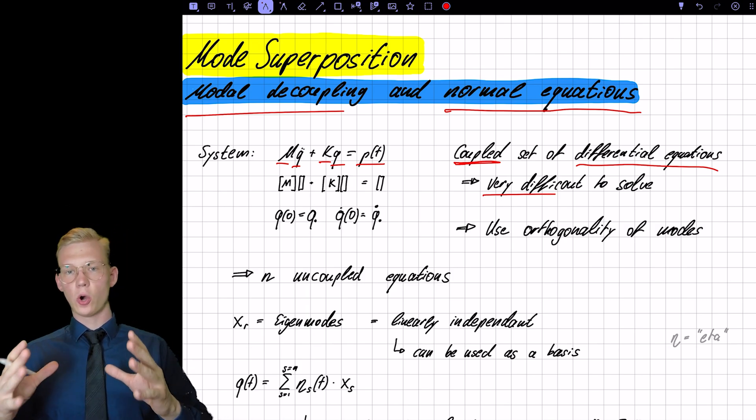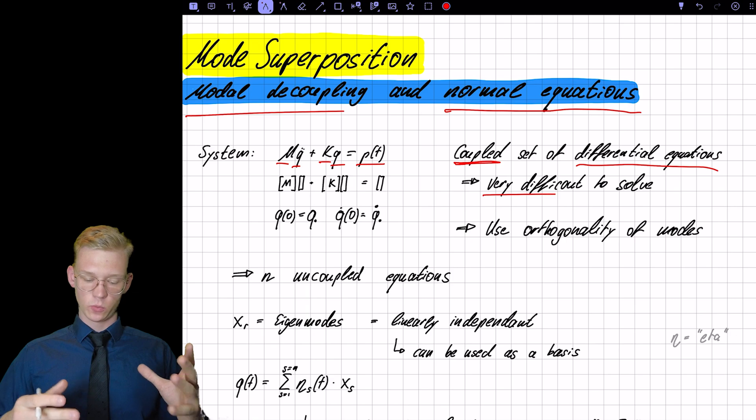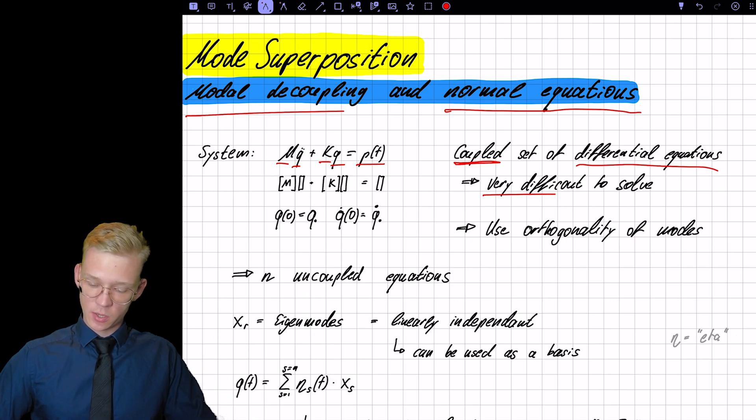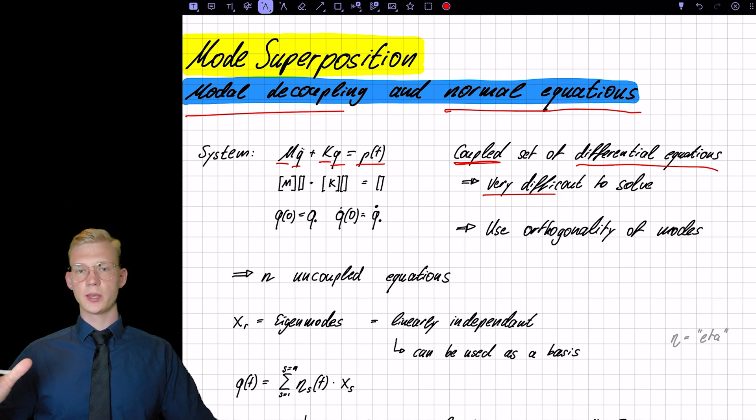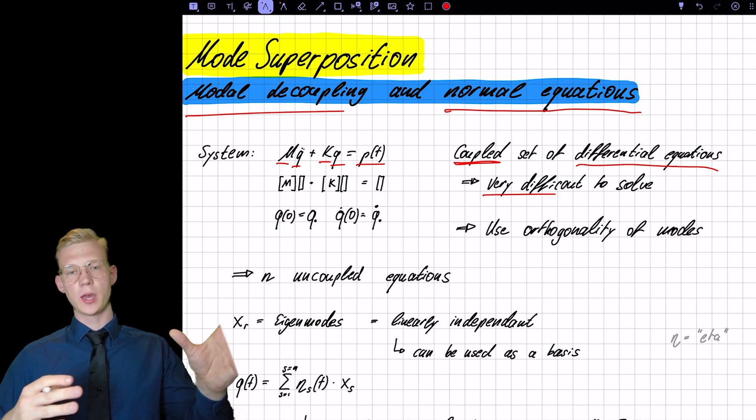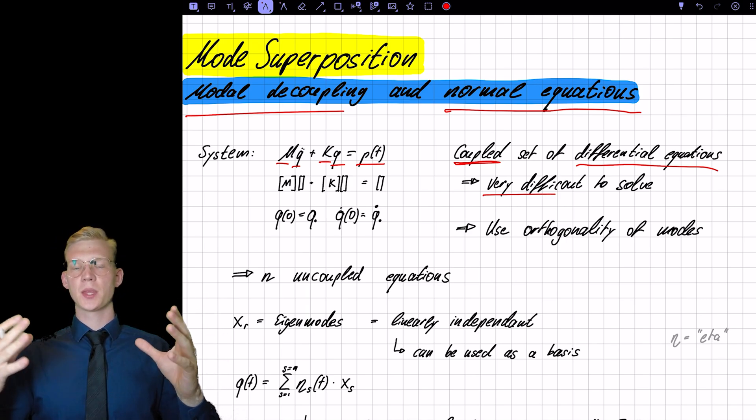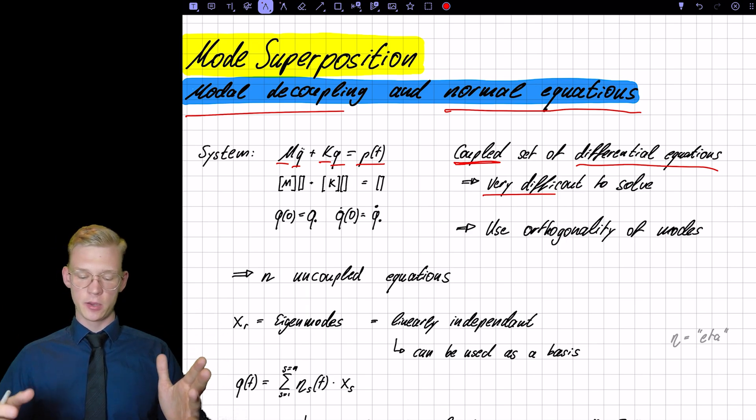So instead of solving the whole system at once, which is very difficult, we can use the orthogonality of the modes that we covered in the last videos. So we got the eigenmodes and eigenfrequencies and we saw that they are M and K orthogonal.